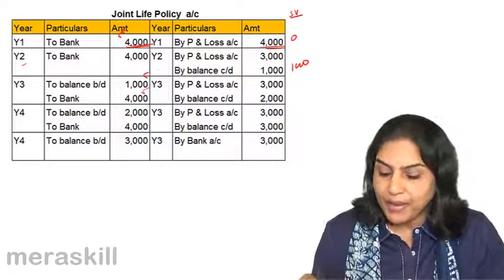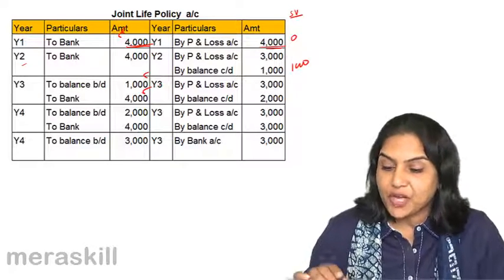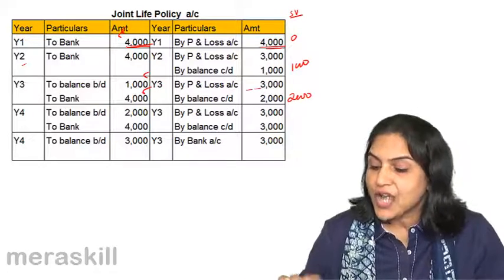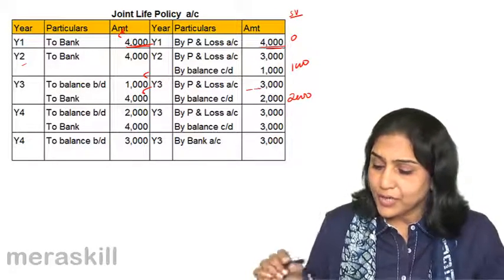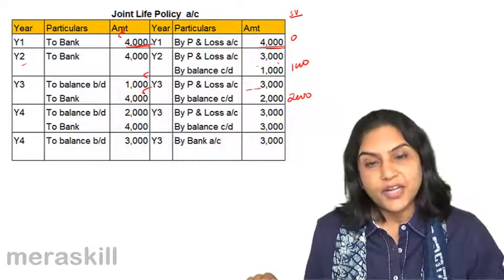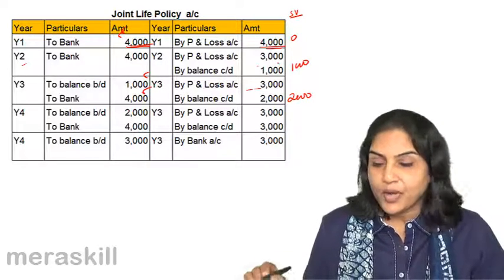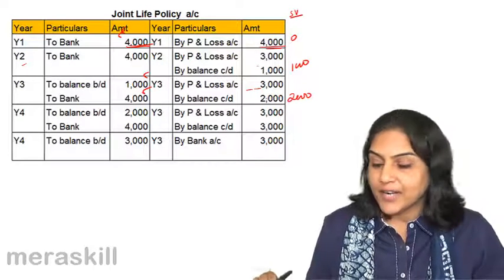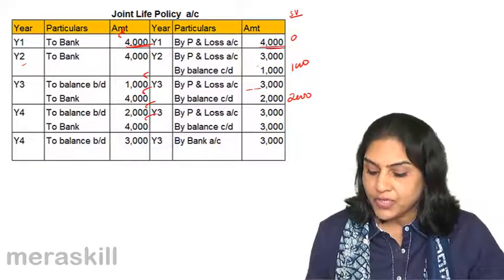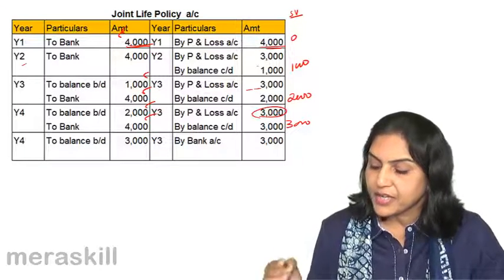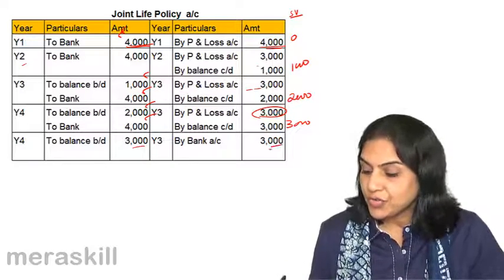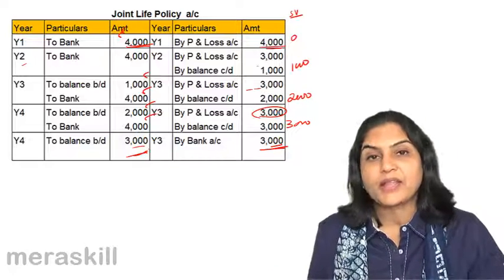Next year, we bring down the balance of 1,000 and pay a premium of 4,000, giving a total of 5,000 in the joint life policy account. But the surrender value is only 2,000, so an excess of 3,000 has to be written off to profit and loss account. In year 1 the balance is nil, in year 2 the balance is 1,000, and in year 3 the balance is 2,000 reflecting the surrender values. In year 4, 2,000 is brought down, we pay 4,000 making a total of 6,000, but surrender value is 3,000, so again 3,000 is written off to profit and loss account. In year 5, 3,000 is brought down and we receive 3,000 which is the surrender value, and this account is simply closed.